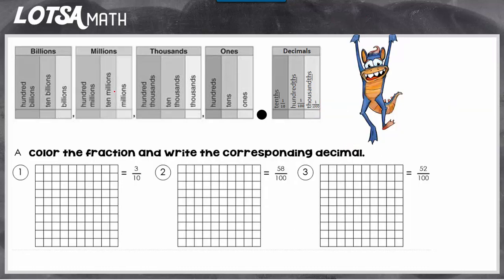So now if we look at these examples, it says color the fraction and write the corresponding decimal. So if we look right here we have three tenths, three out of ten.